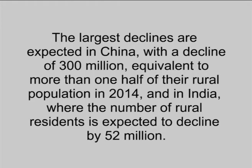The remaining two thirds of countries are expected to have stable or declining rural populations. The largest declines are expected in China, with a decline of 300 million — equivalent to more than one half of their rural population in 2014 — and in India, where the number of rural residents is expected to decline by 52 million.